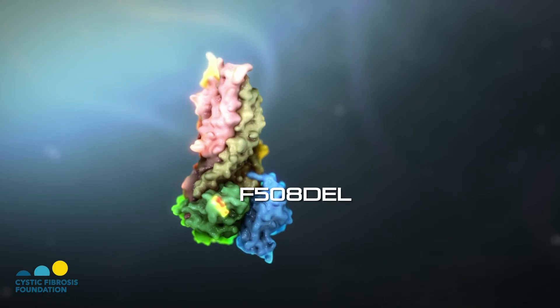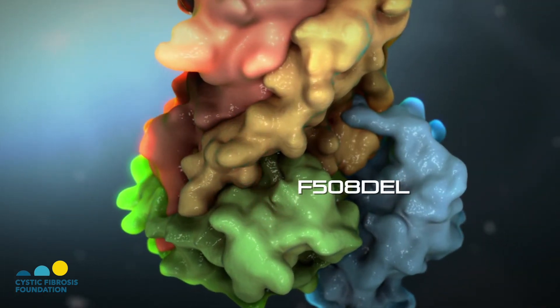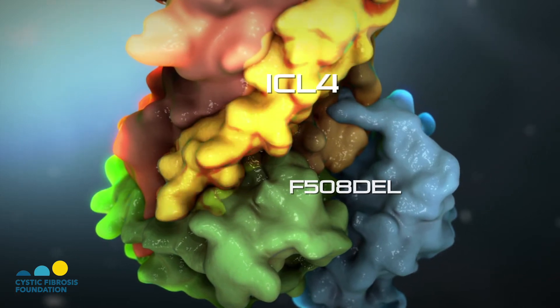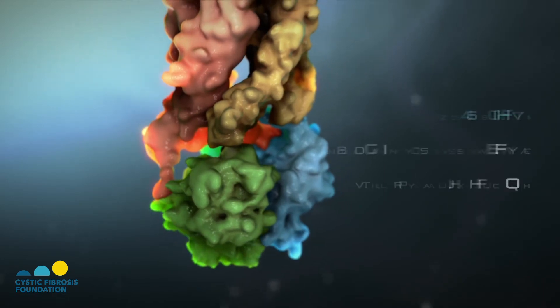However, in people who have the F508-DEL mutation in CF, the F508-DEL amino acid building block is missing. The puzzle pieces no longer fit together properly, and the CFTR is unable to make it to the cell surface to function as a chloride channel.